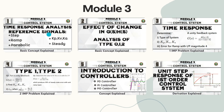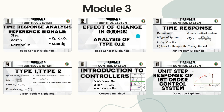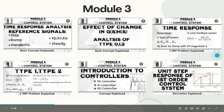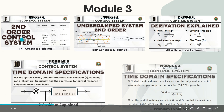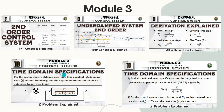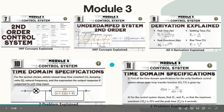From Module 3, we have discussed time response analysis and reference signals — step, ramp, and parabolic signals — along with their respective coefficients. We cover the effect of changes in time response, an introduction to controllers, and the unit step response of first and second order control systems. Time domain specifications and related problems are also solved.